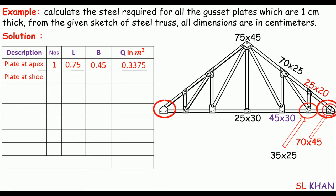Next, the plates at the slope of the truss — you can clearly see there are two of these. Their size is 70×45 centimeters, so in the number column we write 2, length is 0.70 meters, breadth is 0.45 meters. Multiplying these three gives a quantity of 0.630 square meters.